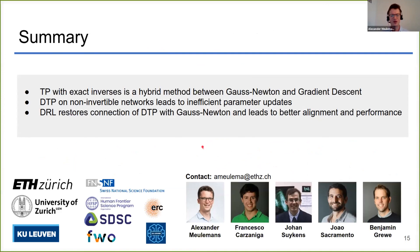As a small summary, we provided a new theoretical framework for target propagation in which we established that target propagation with exact inverses is a hybrid optimization method between Gauss-Newton and gradient descent. Furthermore, we showed that DTP on non-invertible networks loses this connection with Gauss-Newton and leads to inefficient parameter updates.